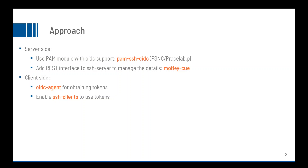On the client side, we have support for an OpenID Connect agent for obtaining the access tokens. Users can obtain the access tokens in any other way, but we think this is the most convenient one. We enable SSH clients to use the tokens via a wrapper script around them.